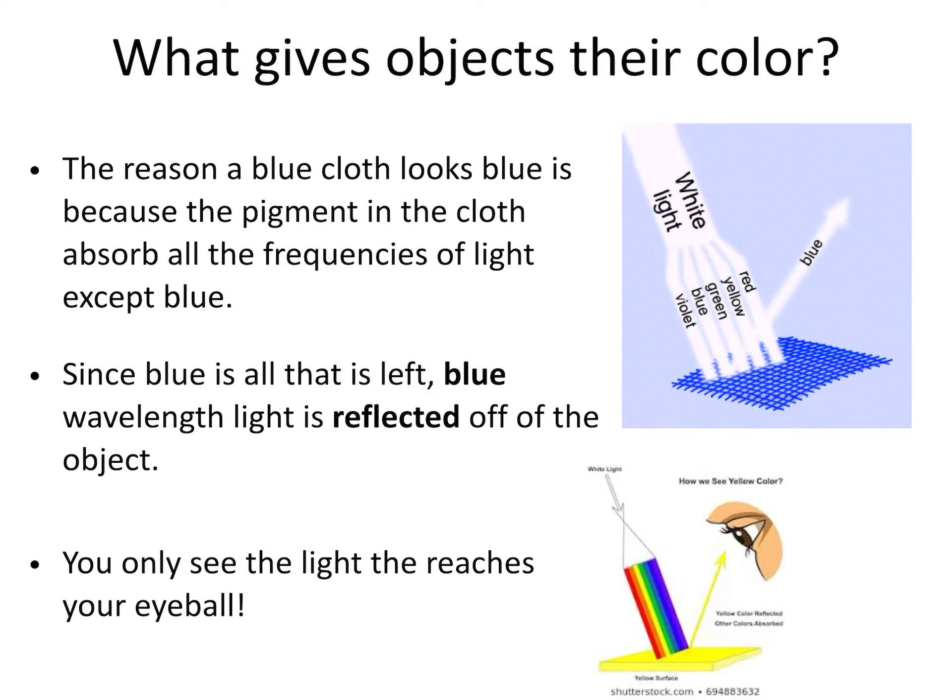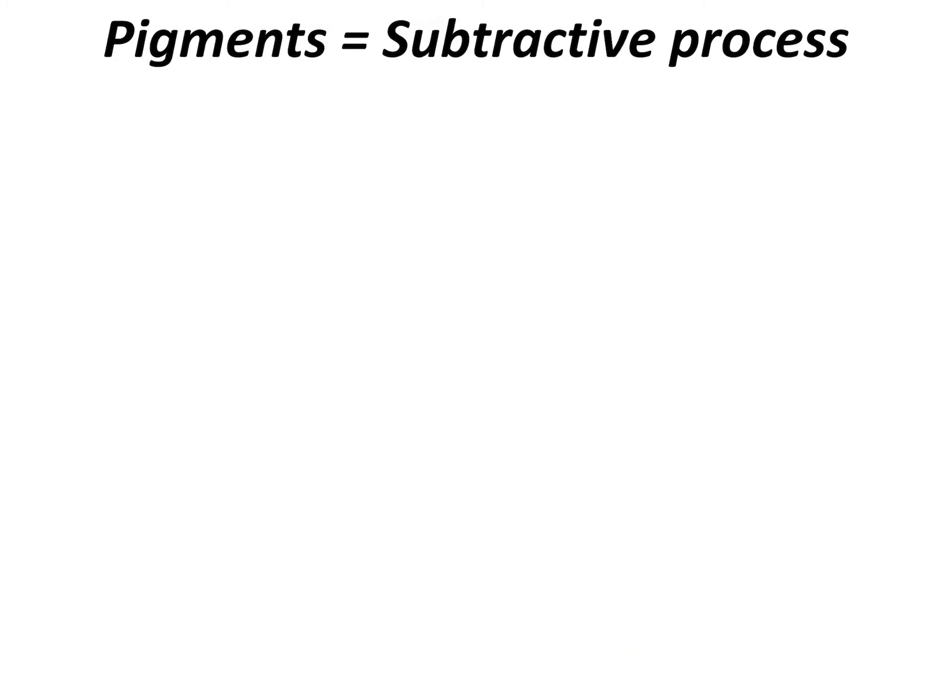This example right here shows that we have white light shining down on something yellow. So you can see from the illustration, only yellow light reached your eyeball. So you see yellow. It really is this simple, guys. When you're trying to answer questions about colors, always break it down to this: you only see the light that reaches your eye.